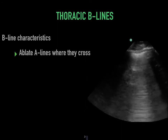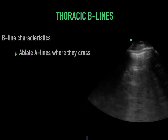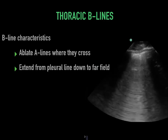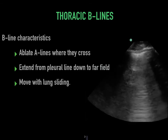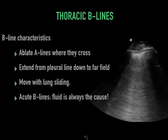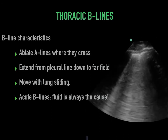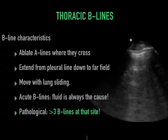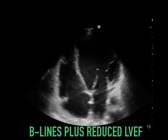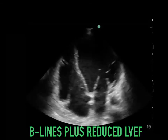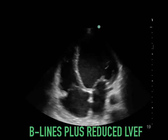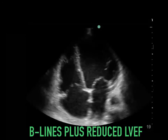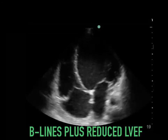Next, thoracic B lines. They often ablate A lines where they cross, so they always take predominance. They go from the pleural line all the way down to the far field — we recommend a depth of around 10 to 12 centimeters. They move with lung sliding. When we see acute B lines, fluid is almost always the cause. Pathological B lines are greater than three at one site. In this apical four-chamber view, there is a severely reduced left ventricular ejection fraction — this patient had cardiomyopathy and acute heart failure. When reduced LV systolic function is seen in concert with B lines, the likelihood ratio of congestive heart failure and pulmonary edema is around 30, which is very high.